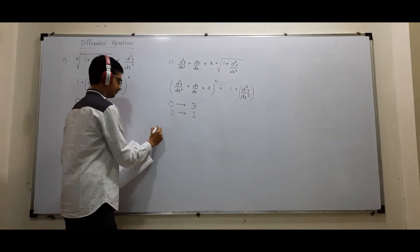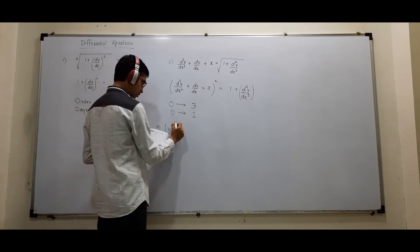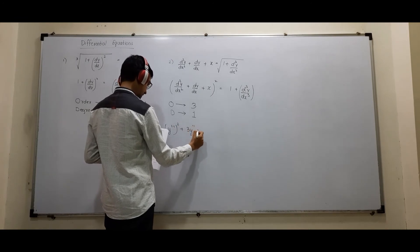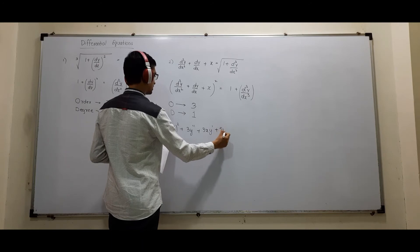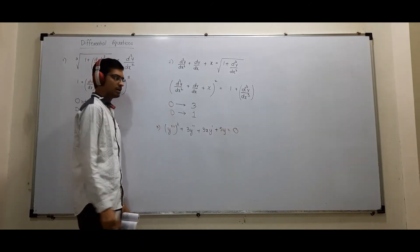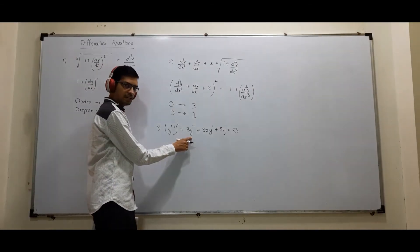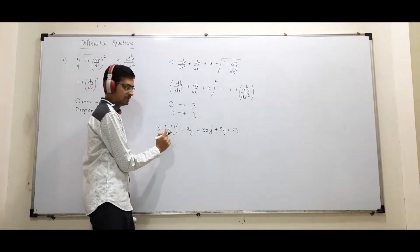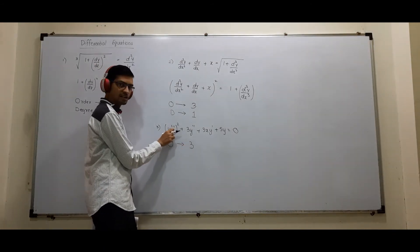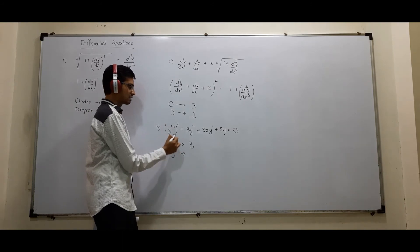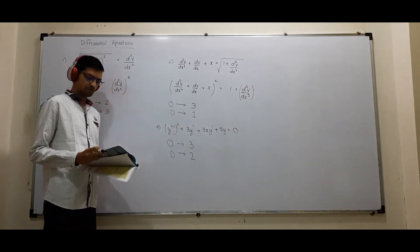Next: (y‴)² + 3y″ − 3xy′ + 5y = 0. Recall: y′ = dy/dx, y″ = d²y/dx², y‴ = d³y/dx³. The highest derivative is the third derivative, so order = 3. The power of y‴ is 2, so degree = 2.